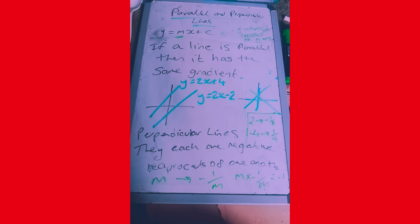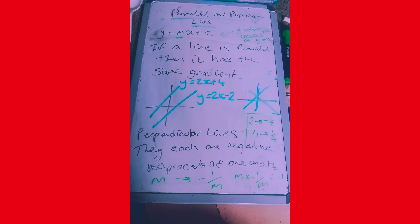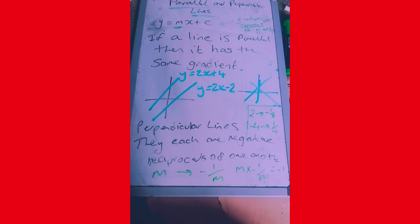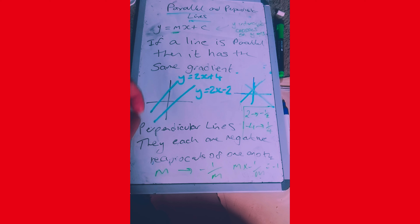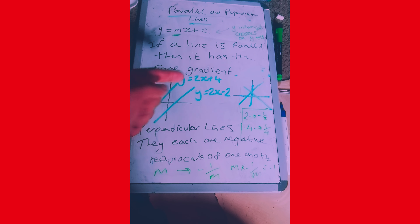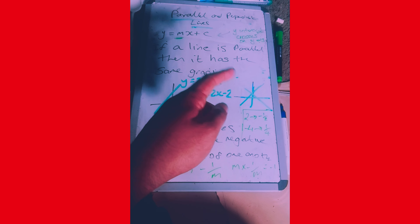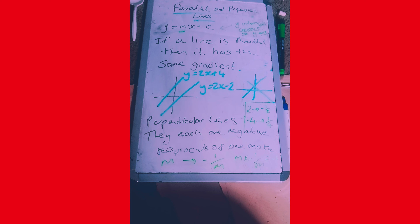To summarize: if two lines are parallel, they never meet — they have the same gradient. If two lines are perpendicular, the product of their gradients multiplies to give negative one. That is how to deal with parallel and perpendicular lines.